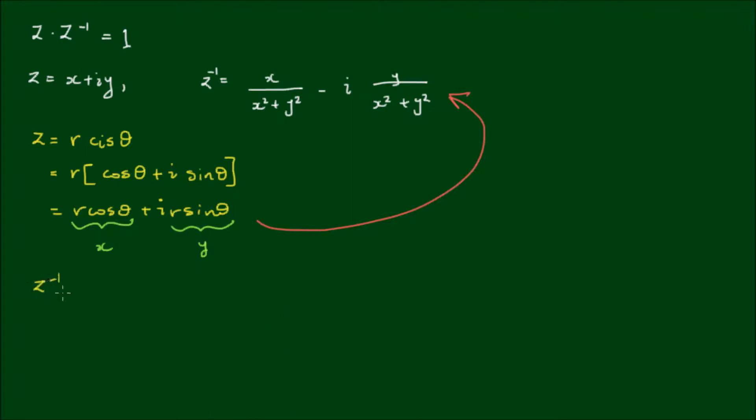So the multiplicative inverse of z then, once we have substituted the expressions for x and y in, we should get r cos θ over (r squared cos squared θ plus r squared sin squared θ) minus i times r sin θ over (r squared cos squared θ plus r squared sin squared θ).